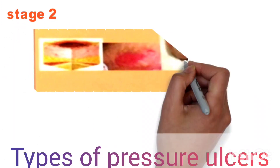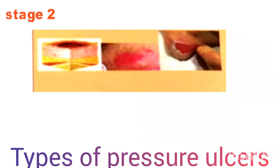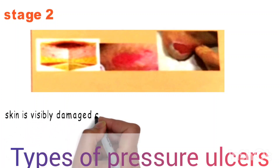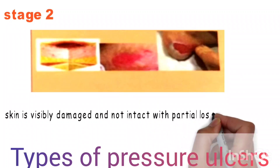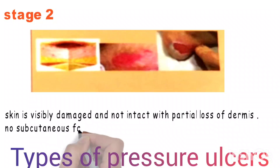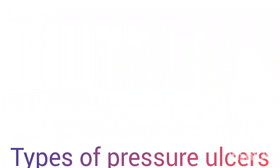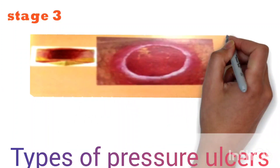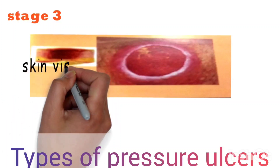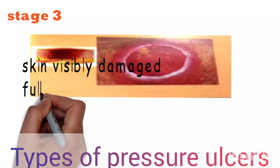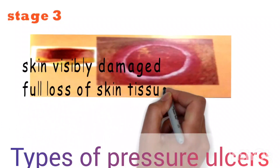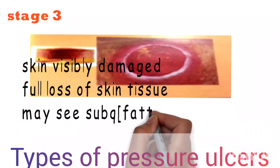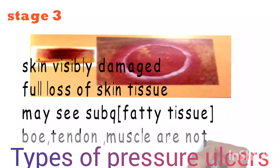Stage two: the skin is visibly damaged and not intact, with partial loss of dermis. However, the subcutaneous fatty tissue cannot be seen. Stage three: the skin is visibly damaged and not intact with full loss of skin tissue. The subcutaneous fatty tissue may be visible, but the bone, tendon, or muscle cannot be seen. That is the third stage of pressure ulcer.